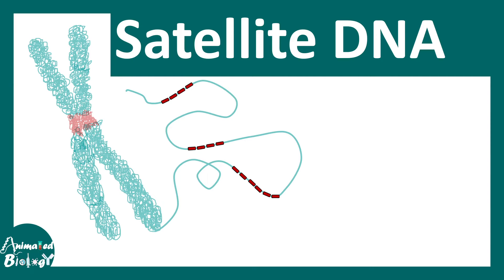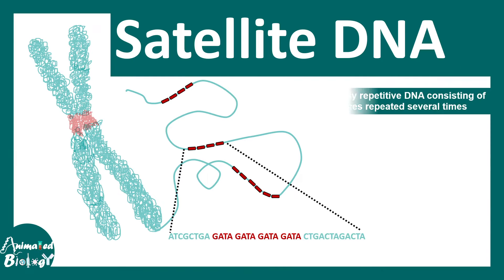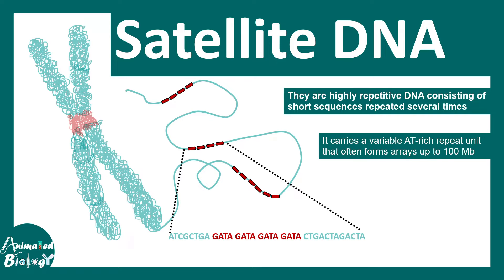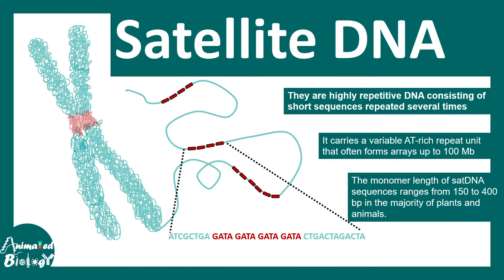In this video we'll talk about satellite DNA. Satellite DNA are repetitive DNA consisting of short sequences which are repeated several times. They carry variable AT-rich repeat units known as repeat monomers, and they can form an array which can totally range up to 100 mega base pairs. The monomer length of these repeat units could vary from 150 to 400 base pairs on average, but they could be as short as 15 or even 3-4 base pairs, and this is present in both animals and plants.